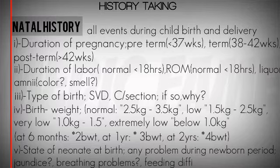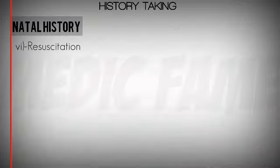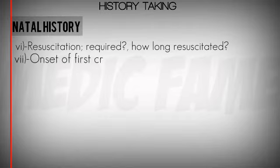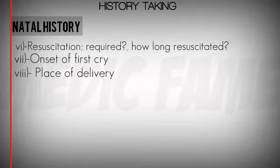The fifth component is the state of the neonate at birth — any problems during the newborn period like jaundice, difficulty in breathing, or feeding difficulties. We note if the baby was admitted, for how long, and if taken to the ICU. Also, the onset of first cry — whether immediate or delayed — and the place of delivery.